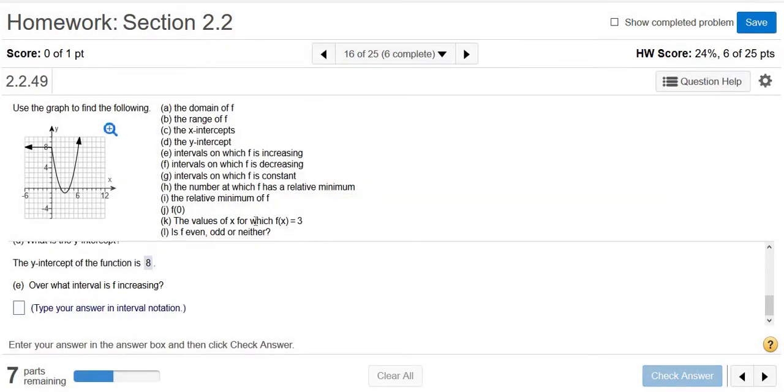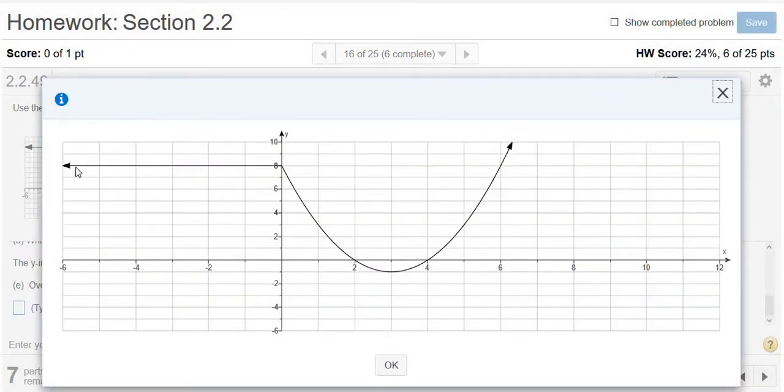On what interval is the function increasing? Let's go back to our graph. When you're thinking about increasing, decreasing, or constant, you want to go left to right. Here it's constant from negative infinity to 0. Here it's decreasing from 0 to 3. And then here it's increasing from 3 to infinity.